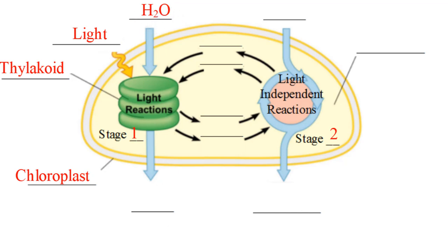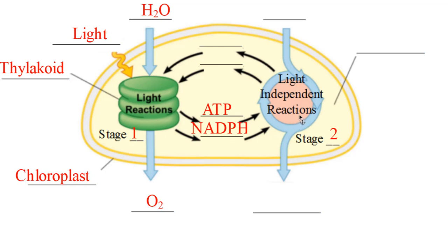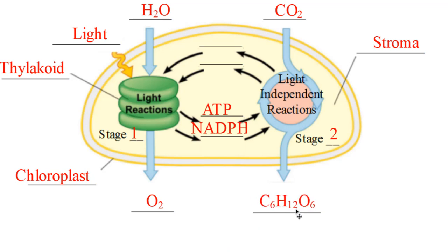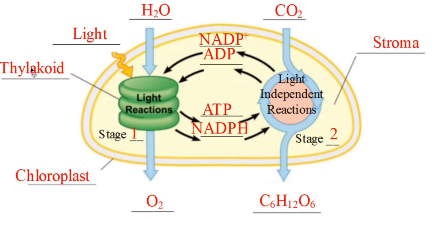H2O — what's coming out of that is oxygen gas. Also coming out are NADPH and ATP, high-energy electrons, going into Stage 2. Stage 2 has a cycle going on called the Calvin cycle, which all happens in the stroma. The reactant for Stage 2 is carbon dioxide, and the product is C6H12O6. What gets kicked back is ADP and NADP+ back to Stage 1 to carry the high-energy electrons. That is the overall of photosynthesis.